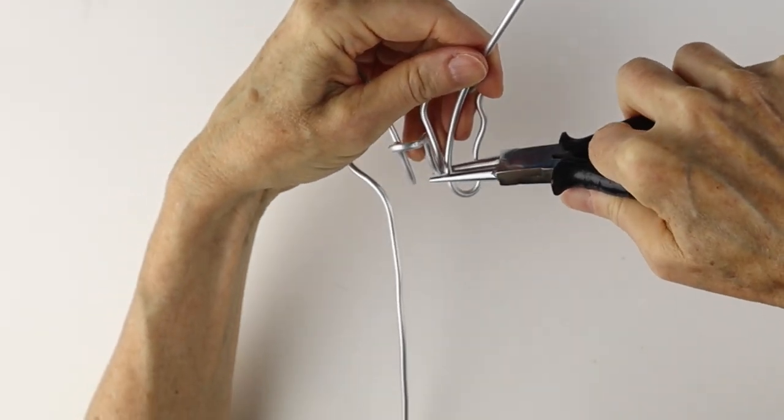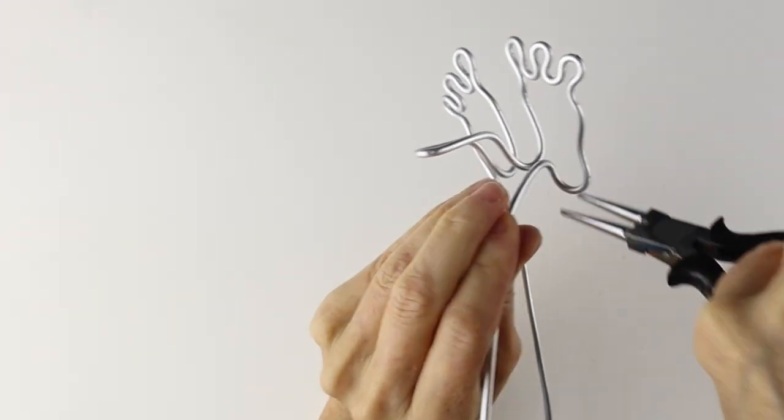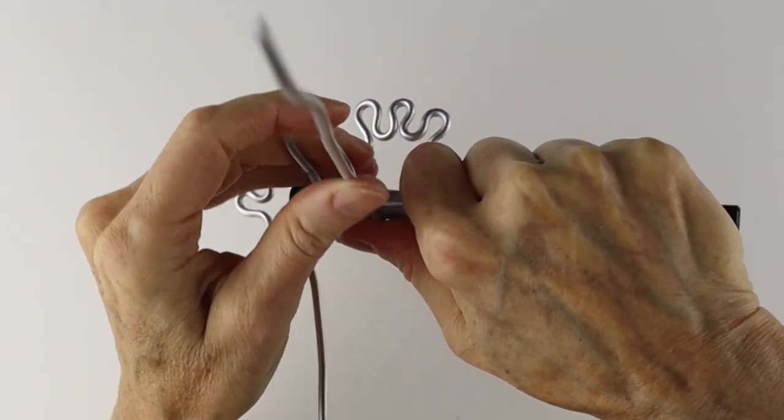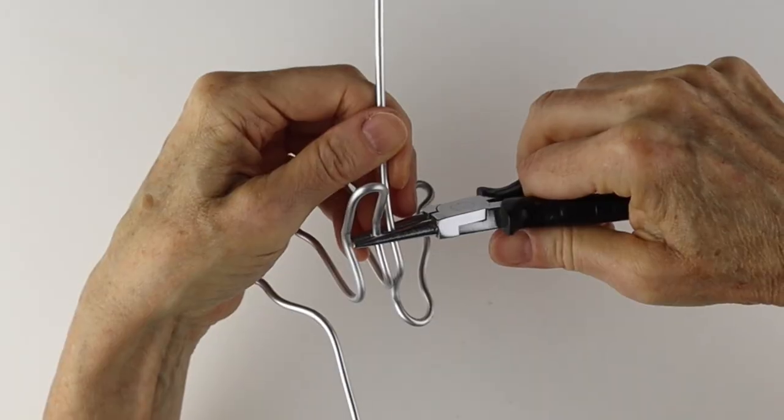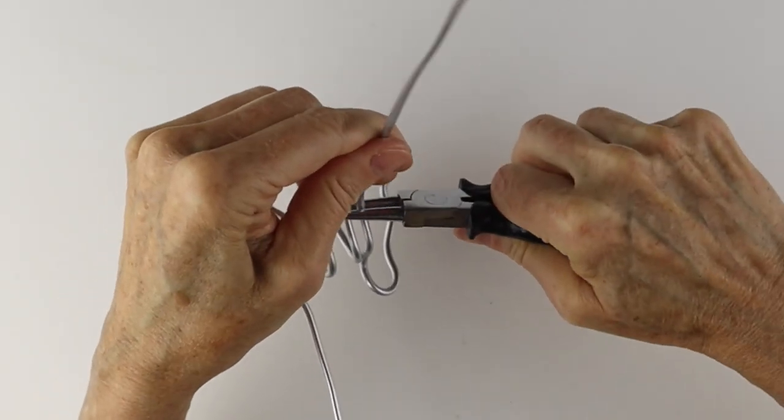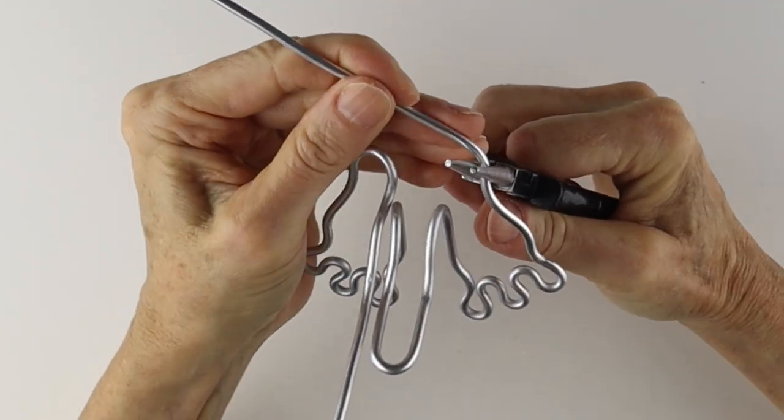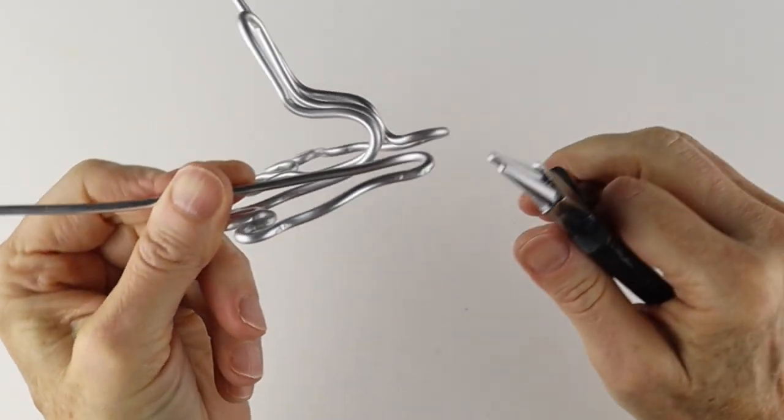And then we're going to bring this one straight up and follow that curve. So you can get this round form, bring it across here and bring it straight up. So it looks like that. Same here, bring it around.